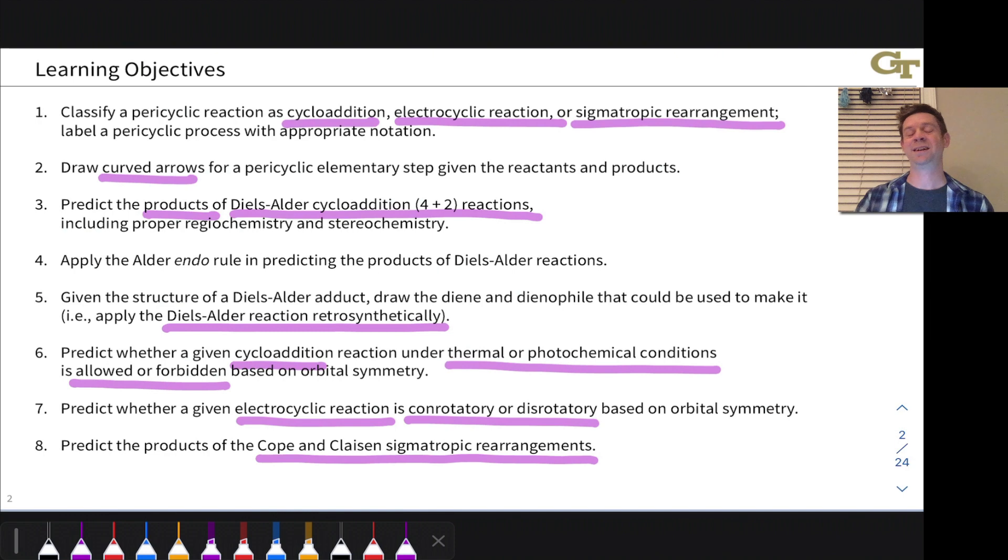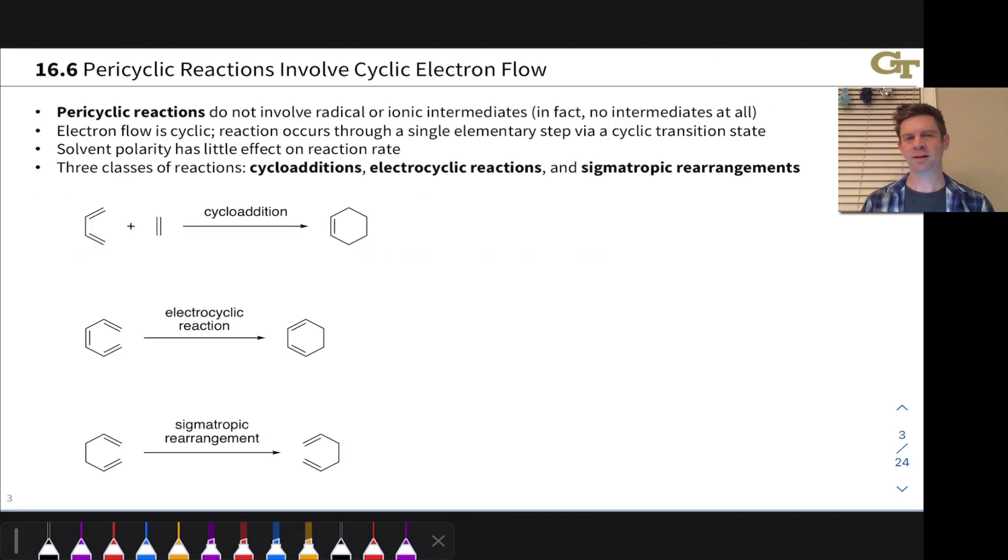Pericyclic reactions are unique in that they do not involve radical or ionic intermediates. In fact, most involve no intermediates at all. All the bond reorganization happens in a single elementary step via cyclic electron flow. Electrons move around in a circle, essentially, via a single elementary step.